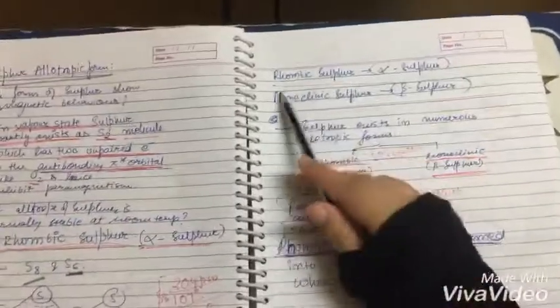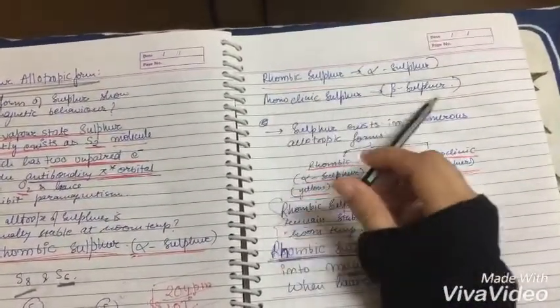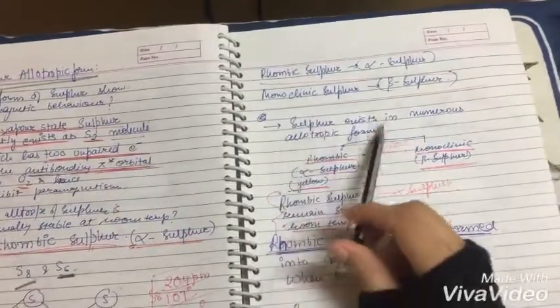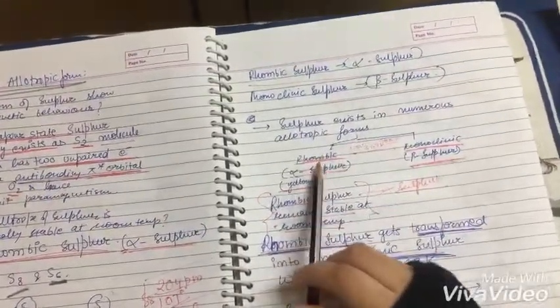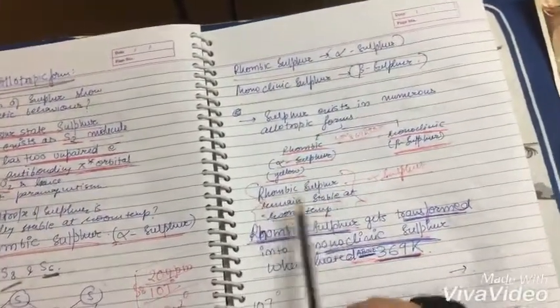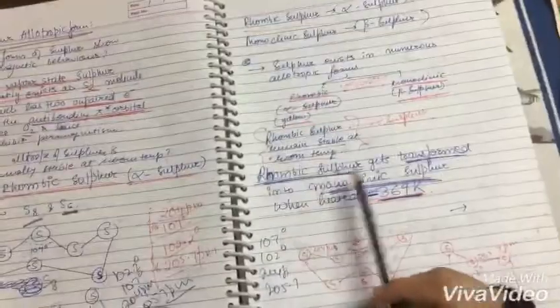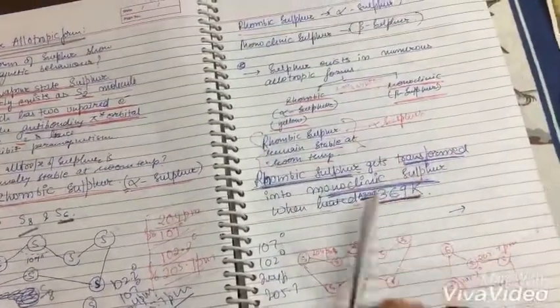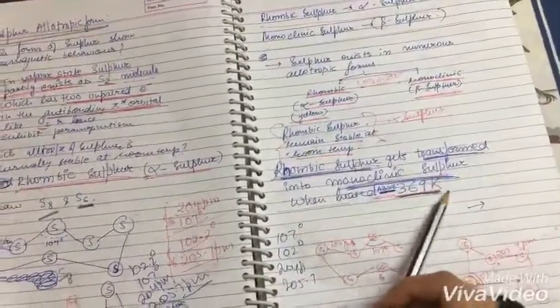Then you have rhombic sulfur that is alpha sulfur and monoclinic sulfur which we call beta sulfur. So sulfur exists in numerous allotropic forms, rhombic and monoclinic. Okay, rhombic sulfur gets transformed into monoclinic sulfur at 369 kelvin. That's it.